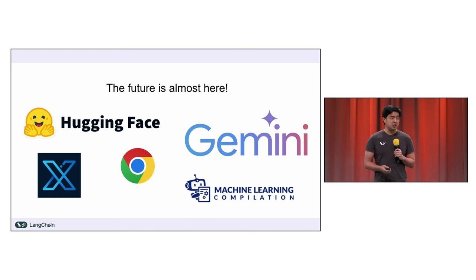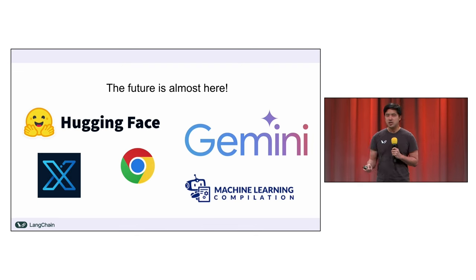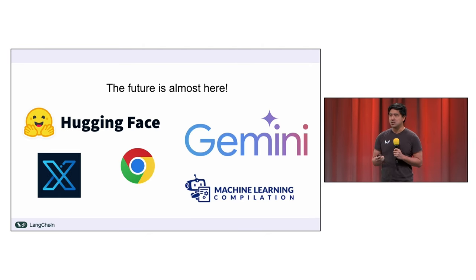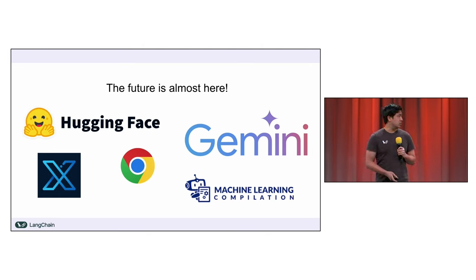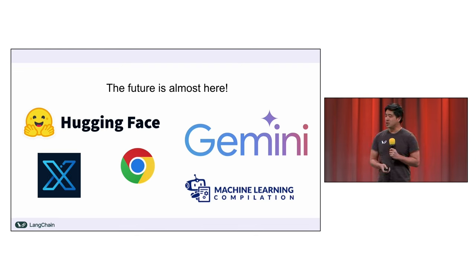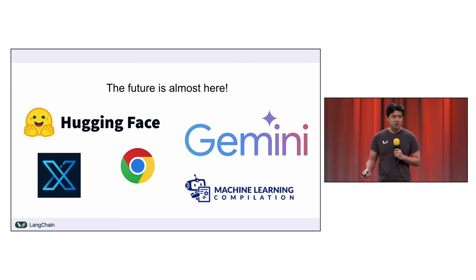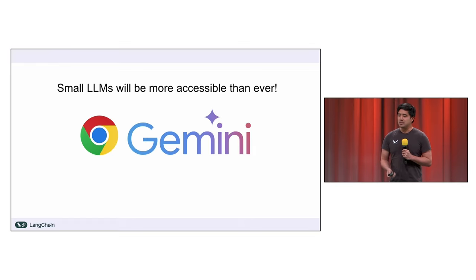We've seen some amazing use cases so far in this conference around Imogen and multimodal models. I'm going to be talking more about text-based LLMs where a lot of reasoning happens — more of these intelligent apps. We heard awesome talks from Charlie from WebLLM, Joshua from Hugging Face, and with the work the Chrome team is doing developing a built-in browser inference API, the future's almost here. Small LLMs are more accessible than ever and are fast approaching the mainstream.